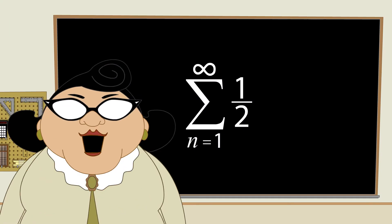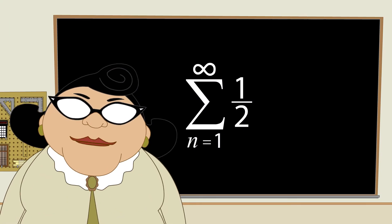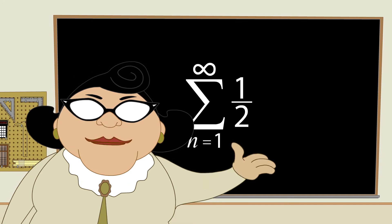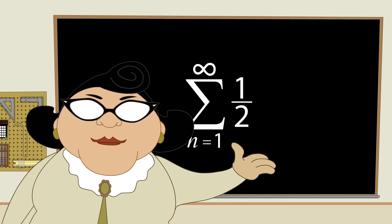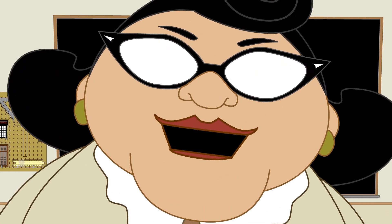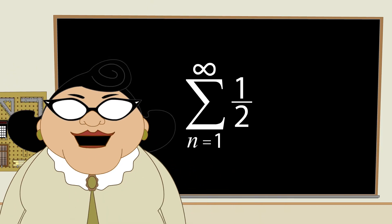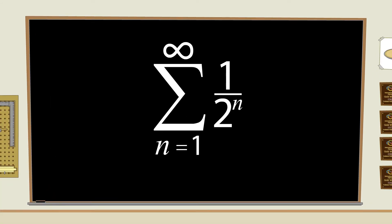So, as long as the terms grow or stay the same, an infinite number of them will always sum up to infinity. But what would happen if each term was smaller than the previous term? Let's take an infinite series of the terms 1 over 2 to the nth power. In this series, the first term is 1 over 2 to the first power, or 1 half.